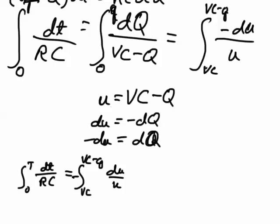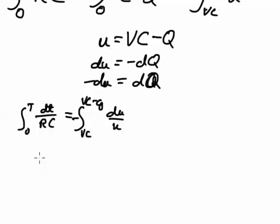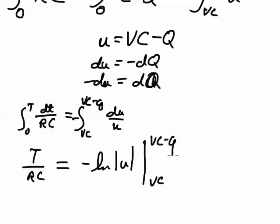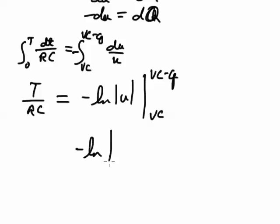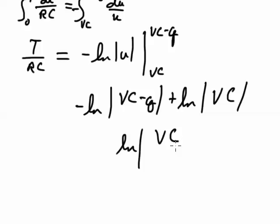So the integral of a constant in t is just going to be t over RC here. And this one is going to be negative natural log of u from VC to VC minus q, which would be negative natural log of VC minus q minus negative natural log of VC, which is the same thing as natural log of VC over VC minus q, because this is one of the properties of logarithms.